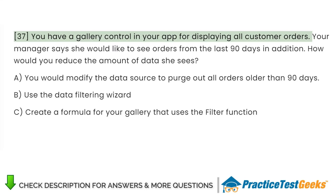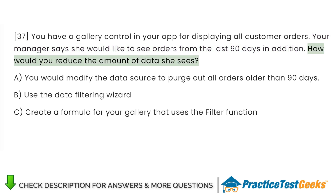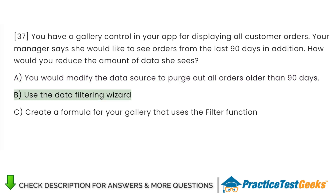You have a gallery control in your app for displaying all customer orders. Your manager says she would like to see orders from the last 90 days. How would you reduce the amount of data she sees? A. Modify the data source to purge out all orders older than 90 days. B. Use the data filtering wizard. C. Create a formula for your gallery that uses the filter function.